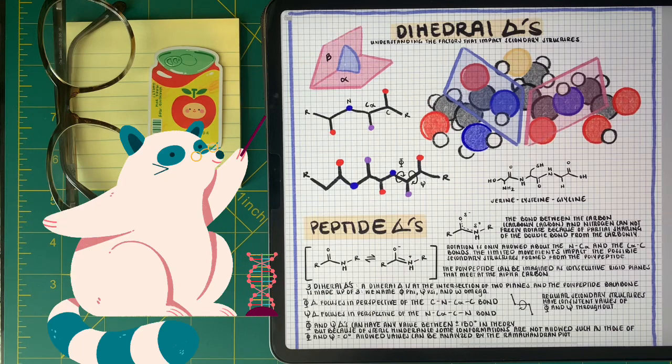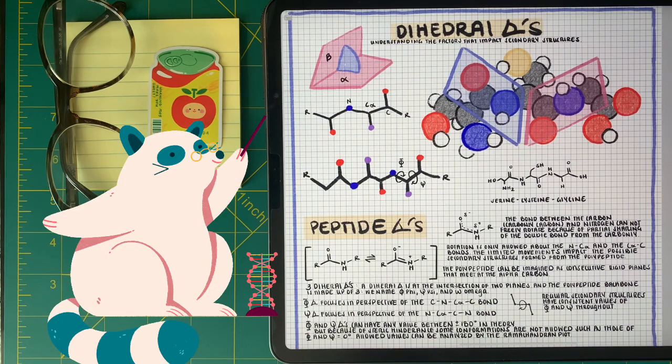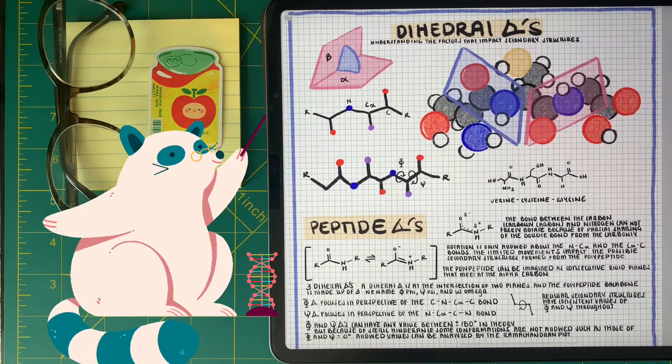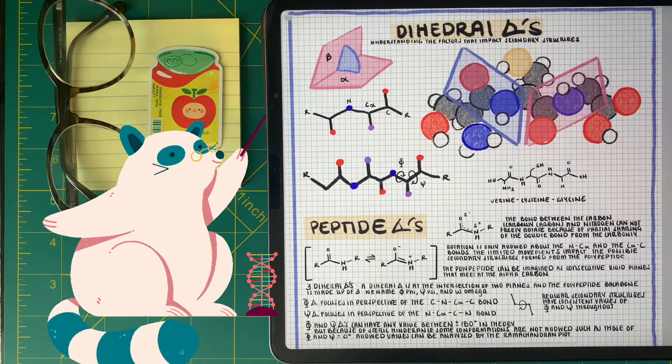The phi angle focuses on the carbon, nitrogen, alpha carbon, carbon, whereas the psi angle focuses on the nitrogen, alpha carbon, carbon, nitrogen bond. It seems confusing at first, but it's all a matter of perspective.